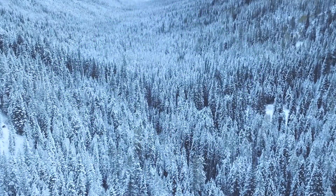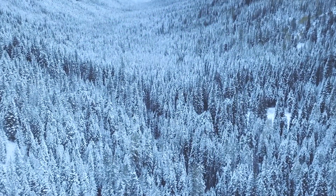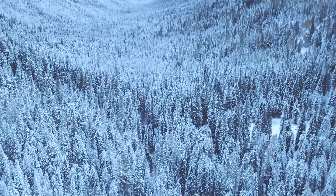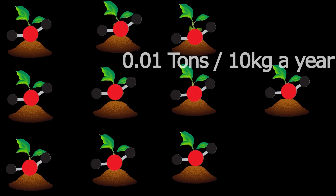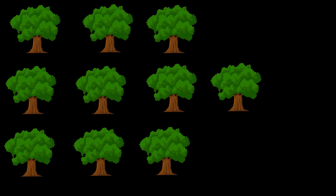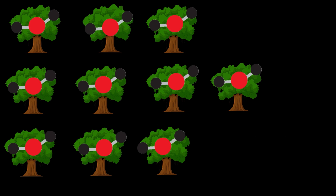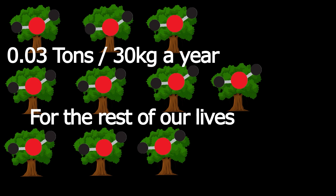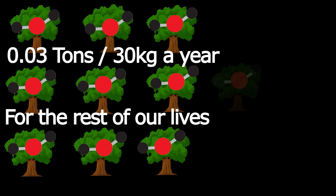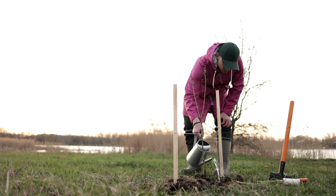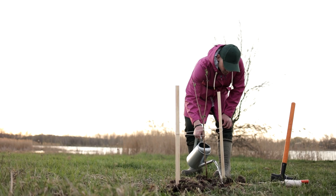This means the actual number of trees that need to be planted is much higher. For a more accurate calculation, we're going to take the average and say a tree sequesters a conservative 0.01 tons of CO2 per year for the first 20 years, and then a conservative 0.03 tons a year for the rest of our lives. We're also going to assume a 10% failure rate among the trees planted, and by taking these conservative estimates, we can ensure our CO2 emissions are offset.